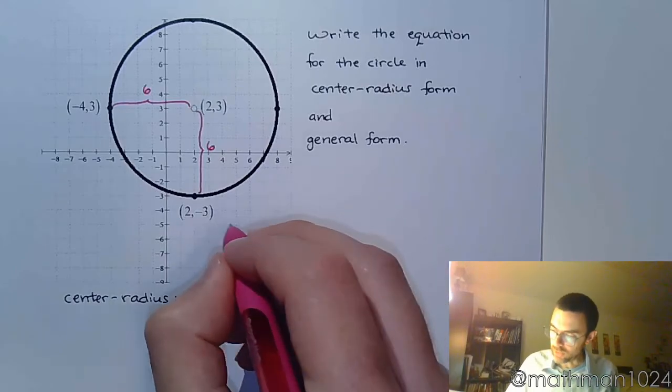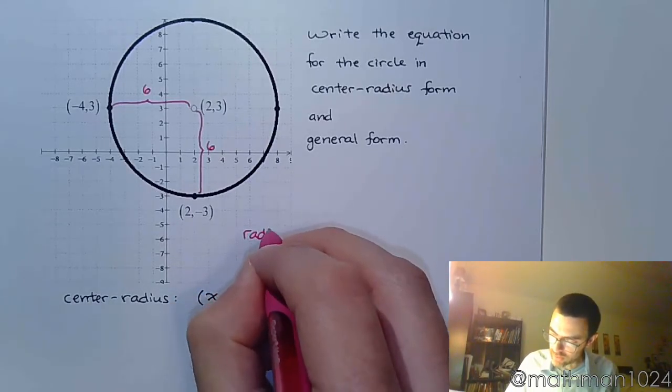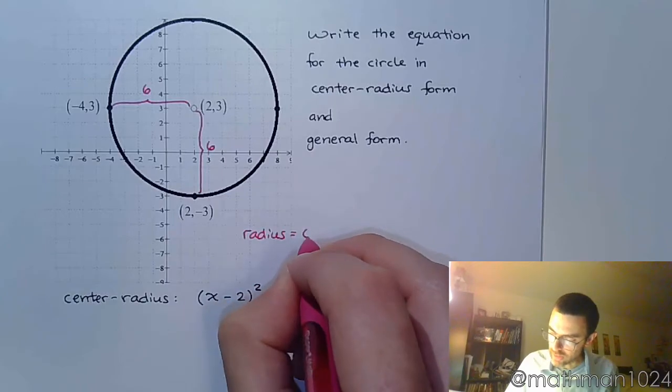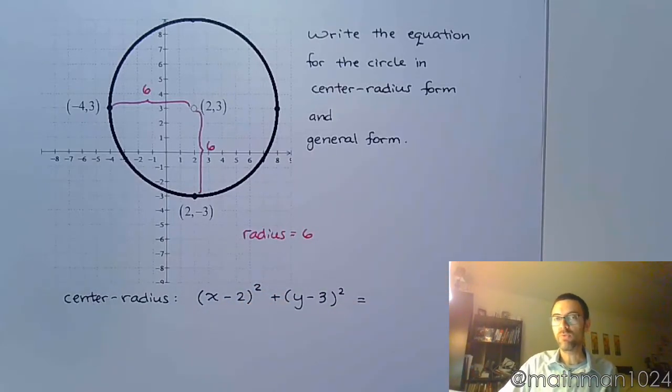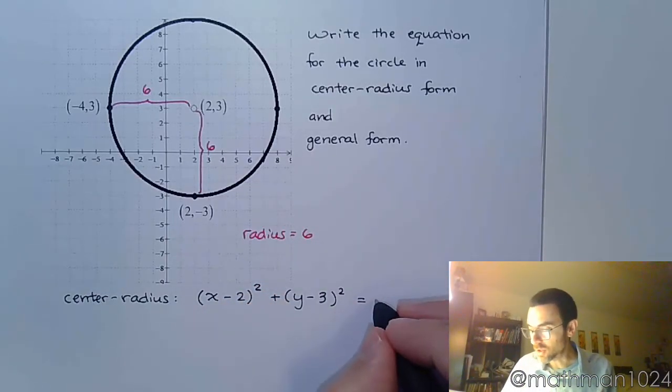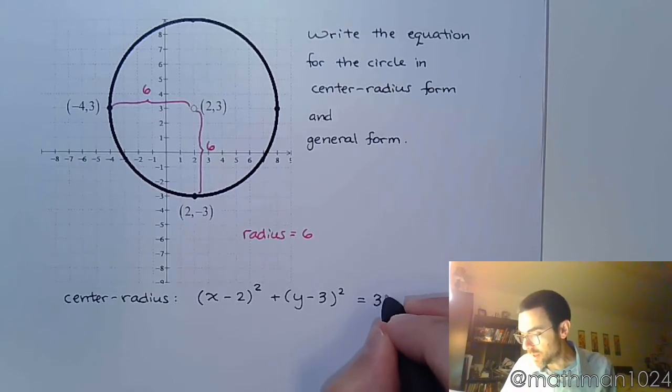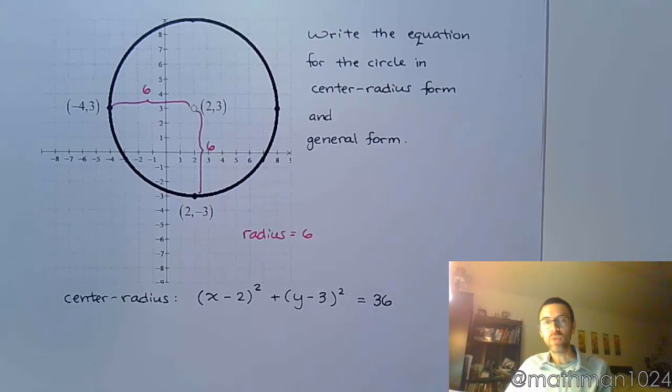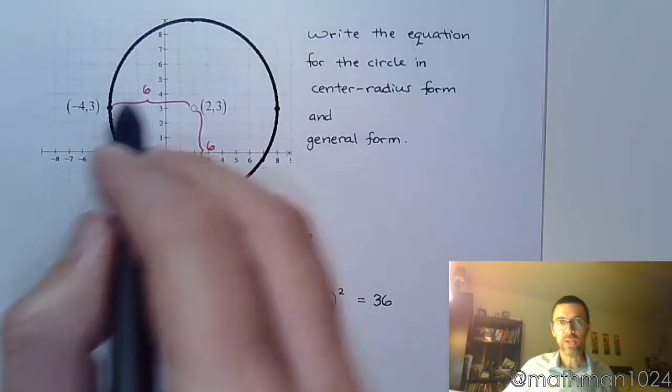So this means my radius is equal to 6, which means for my center-radius form, this is r squared, and that's going to be 36. So that's the equation for your circle in center-radius form.